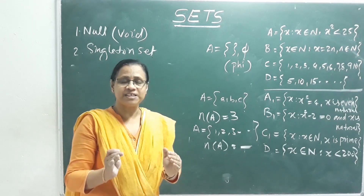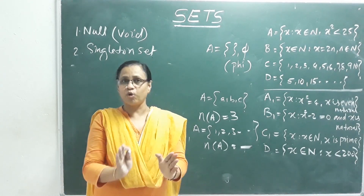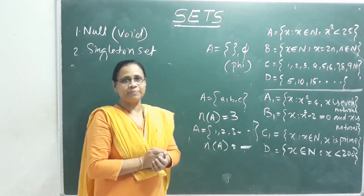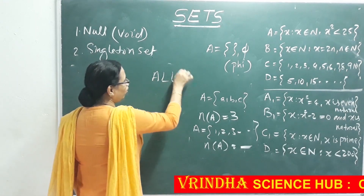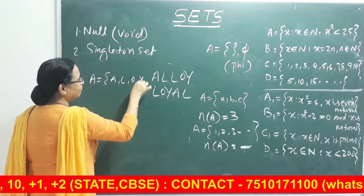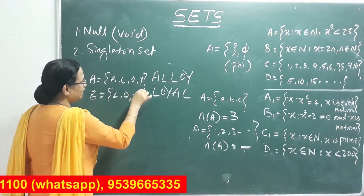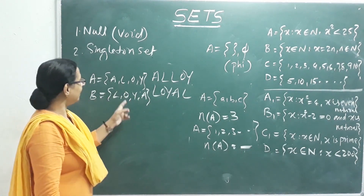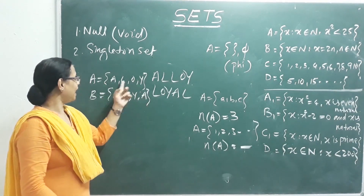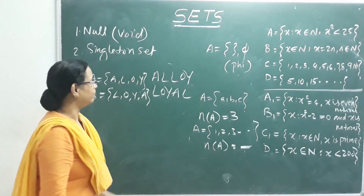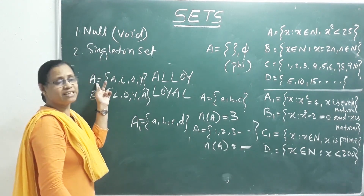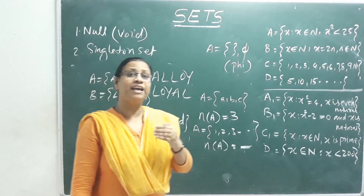An equal set is when two sets have the same elements. For example, the words ALLOY and LOYAL: Set A from ALLOY = {A, L, O, Y} and Set B from LOYAL = {L, O, Y, A}. Both have the same elements, so A equals B — they are equal sets.